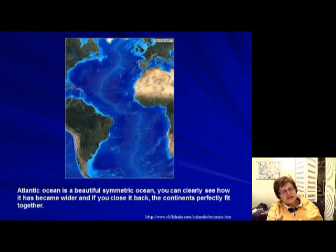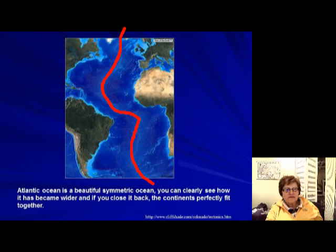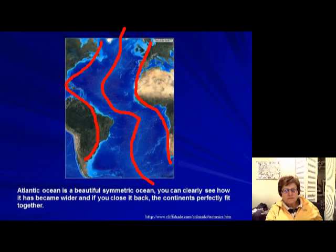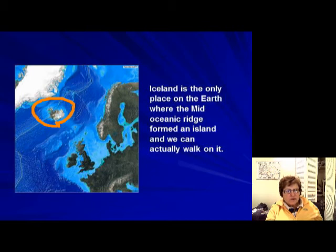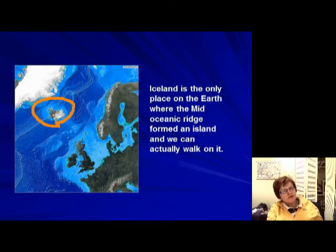A perfect example of this is the Atlantic Ocean. Look at the mid-oceanic ridge — the Atlantic Ocean is almost perfectly symmetrical on both sides. The ridge runs down the middle, and both the American side and the European/African side are passive margins. One special place is Iceland — the only place in the world where a mid-oceanic ridge actually formed an island. When you walk on Iceland, you're walking on a mid-oceanic ridge, which is why there are so many volcanoes there.